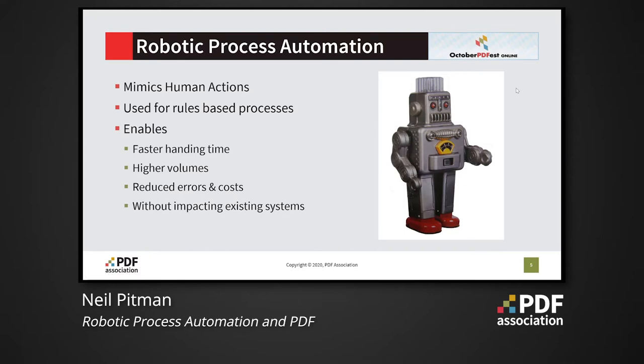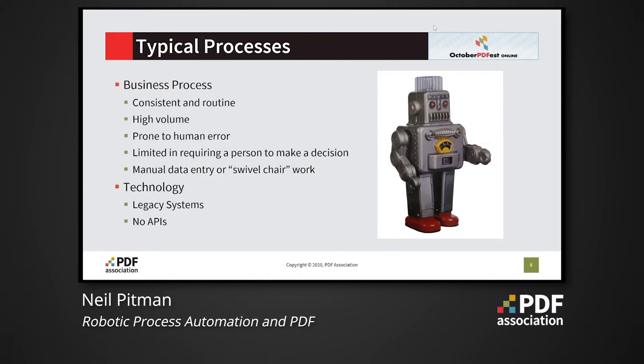Robotic process automation mimics human actions with computer systems and is used for rules-based processes. The benefits of RPA are an increase in the speed and volumes of processing whilst reducing errors, and without any need to change existing computer systems. RPA is most suitable for high-volume routine data entry tasks that don't require complex decision making, particularly those that can be prone to human error. Most commonly this will involve legacy systems that don't have convenient automation APIs.